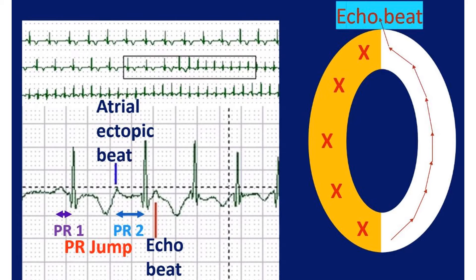When the atrial ectopic beat gets conducted down the slow pathway, there is a sudden increase in PR interval compared to the previous sinus beat. This is known as a PR jump. A PR jump has to be more than 50 milliseconds to be significant. The monitored tracing shown here illustrates the PR jump for the ectopic beat and an echo beat just after the QRS.